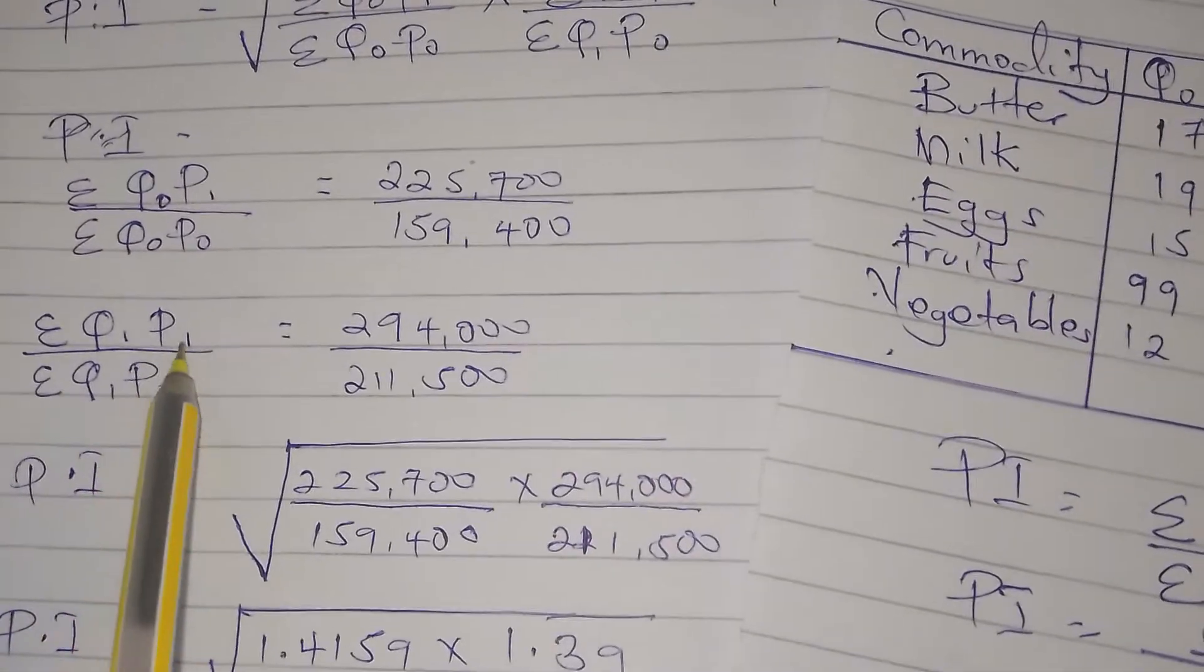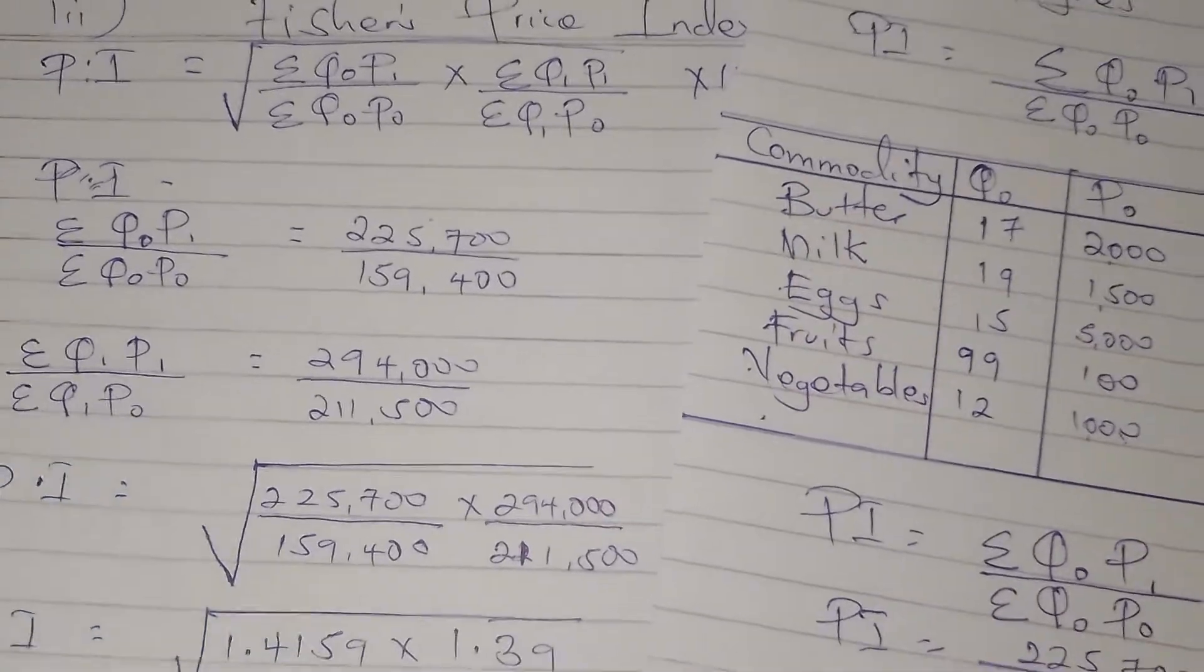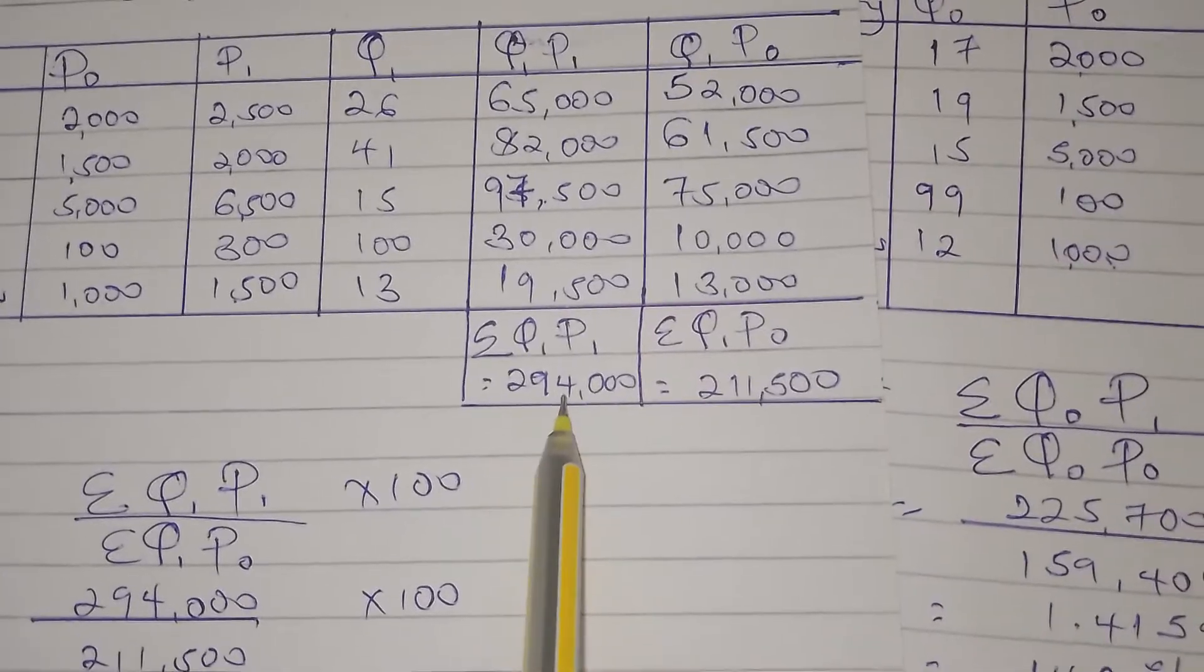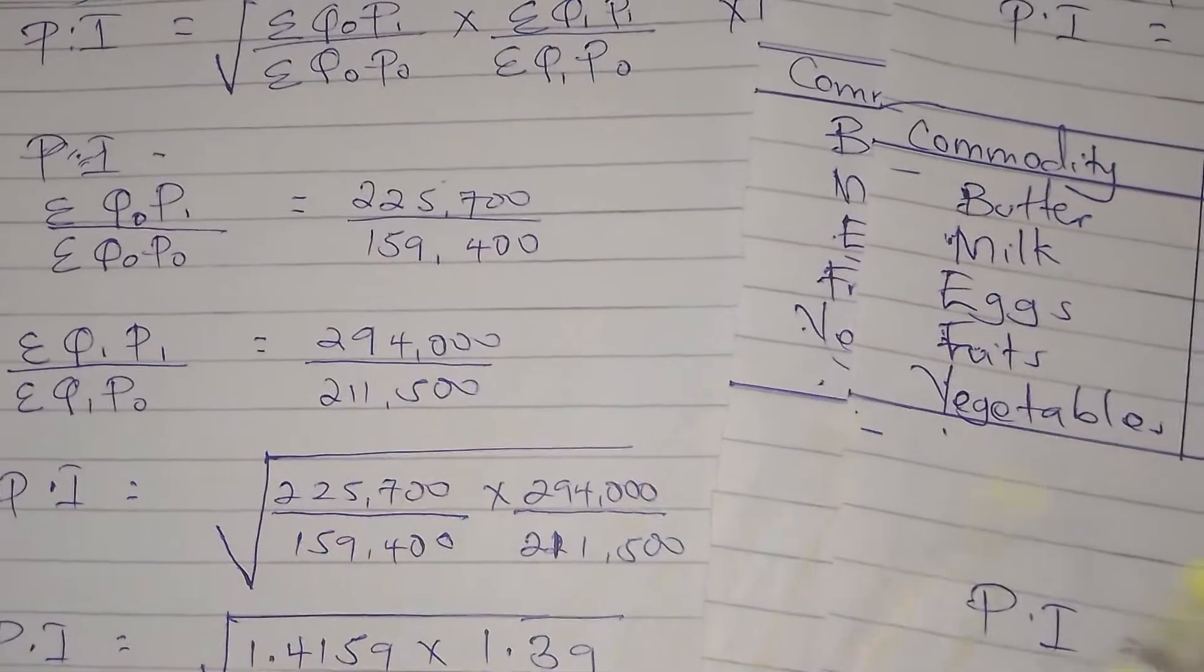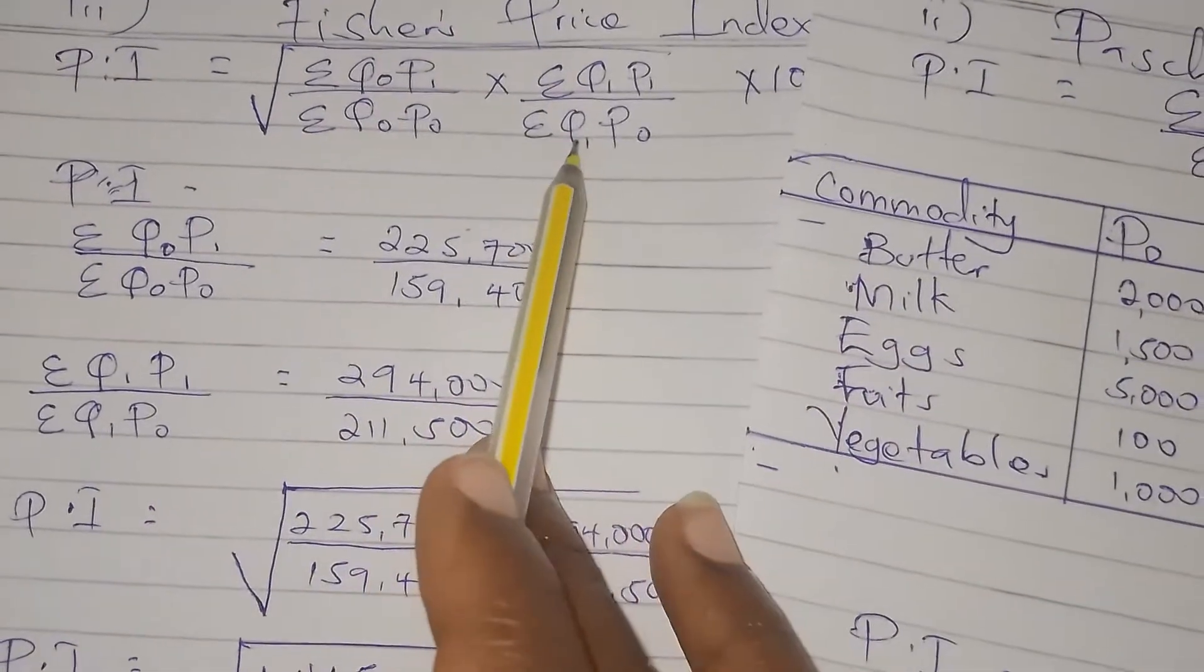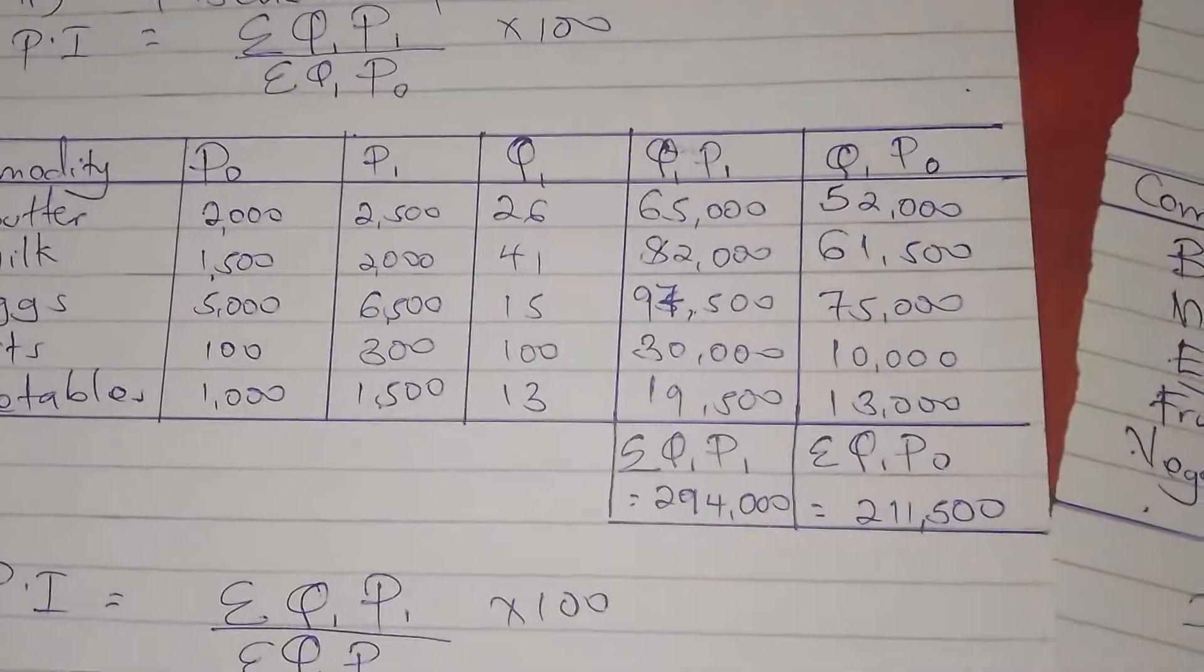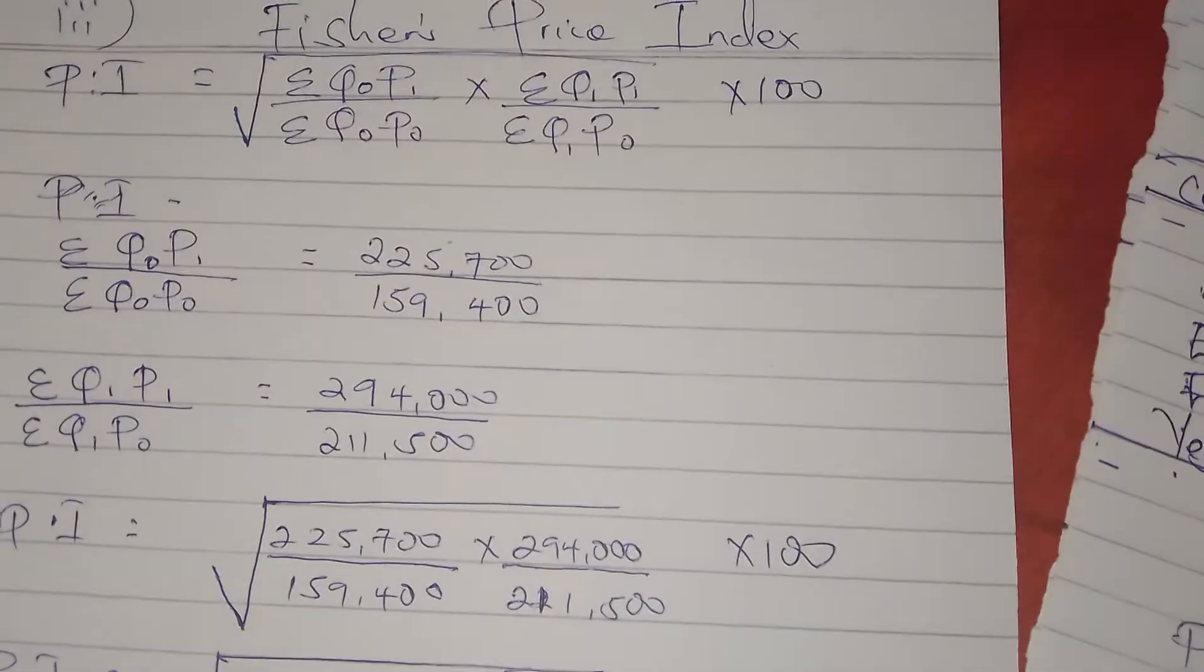Summation q₁p₁ we had it from Paasche price index, it is here, 294,000, so we put it here. Then summation q₁p₀ we also had it from Paasche price index, which is this one, 211,500, so we put them there.